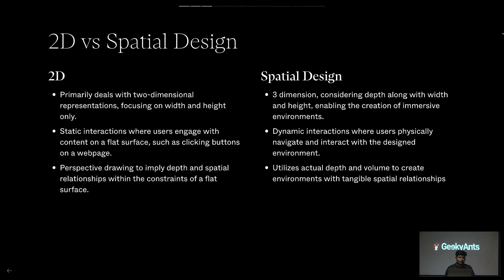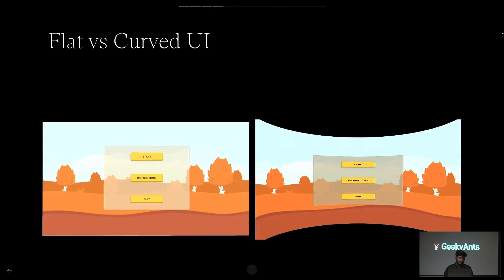Let's talk about perspective drawing. In 2D designs, everything is under perspective — one point or two point. In spatial design, it actually utilizes depth and volume to create a spatial environment. We also have flat UI and curved UI. Right now we use a flat UI in 2D, and curved UI is like what you see in a theater — curved screens.